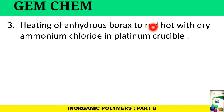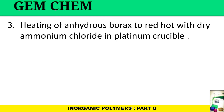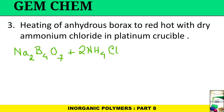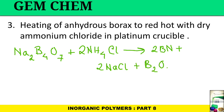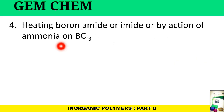The third method is heating anhydrous borax to red heat with dry ammonium chloride in a platinum crucible, where platinum acts as a catalyst. Borax is Na2B4O7, and the reaction is: Na2B4O7 + 2NH4Cl → 2BN + 2NaCl + B2O3 + 4H2O.